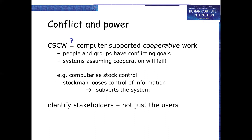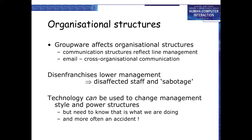Conflict and power in CSCW — Computer Supported Cooperative Work: people and groups have conflicting goals, and systems assuming cooperation will fail. Example: a computerized stock control system where the stockman loses control of information and subverts the system. Stakeholders are not just the users. Organizational structure and group dynamics affect communication structures, reflecting line management, email, and cross-organizational communication.